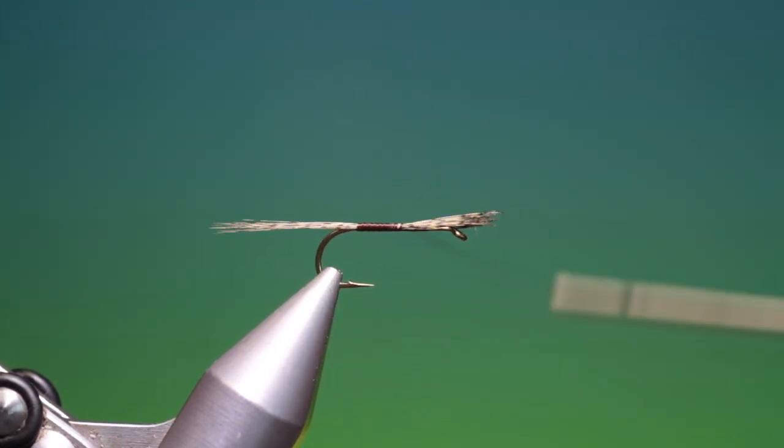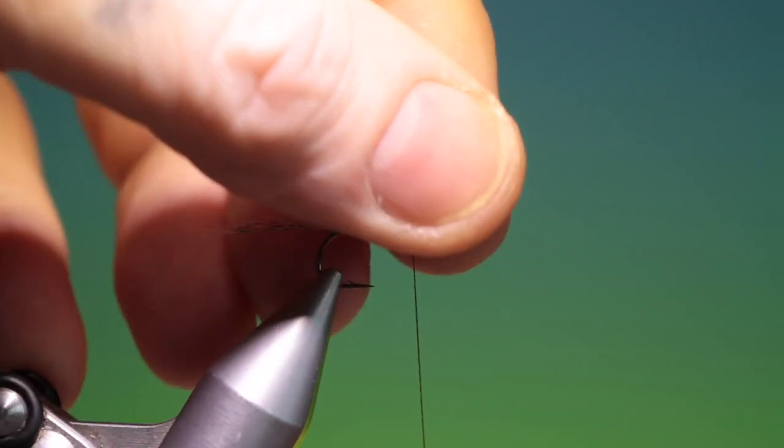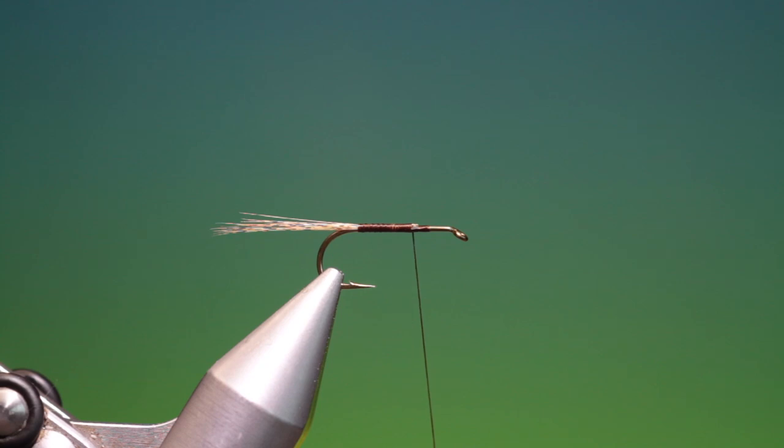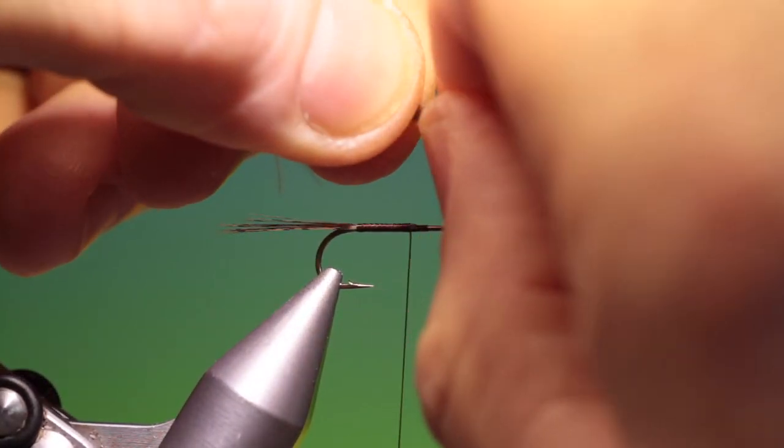This is one of my favorite patterns to fish, the Paraloop and CDC March Brown. We'll just get rid of that and line up the tips of two CDC hackles.